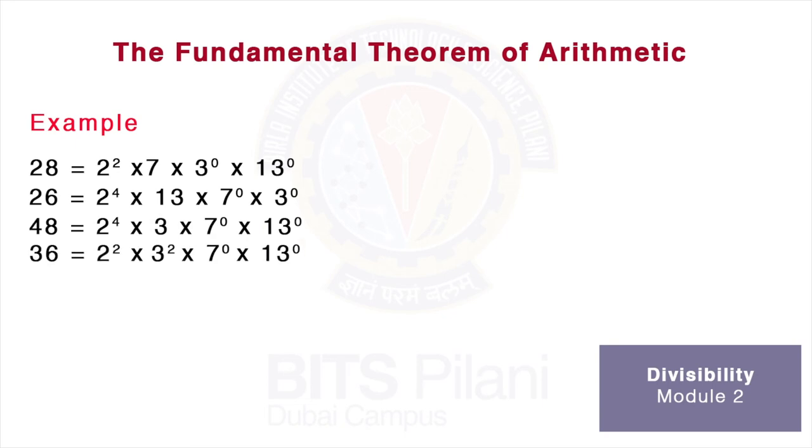All of them have been written as products of primes, and we can see the primes present in all of them are 2, 7, 3, and 13. They were present in some integers but not in others, so we have multiplied by raising them to the power 0.